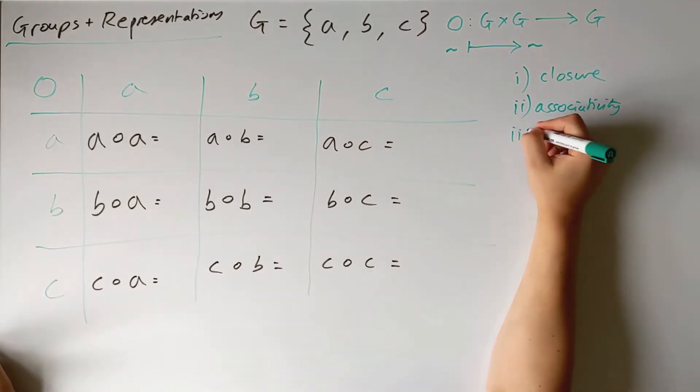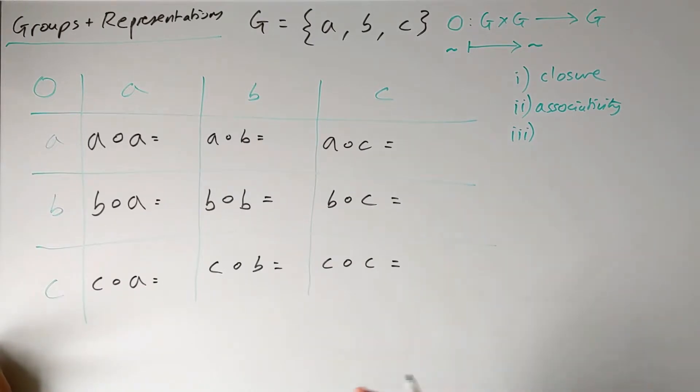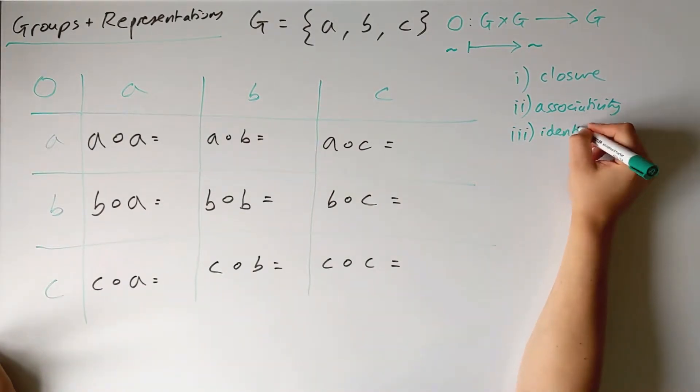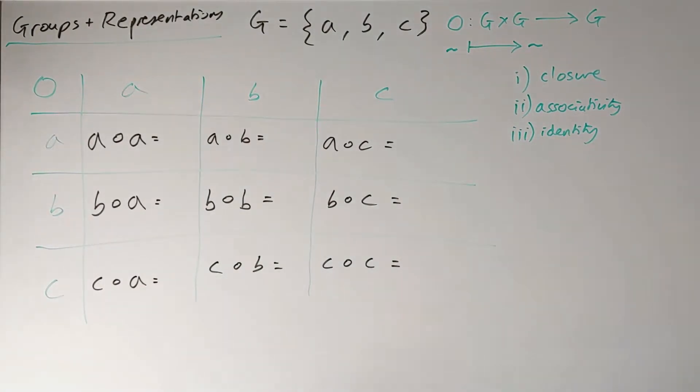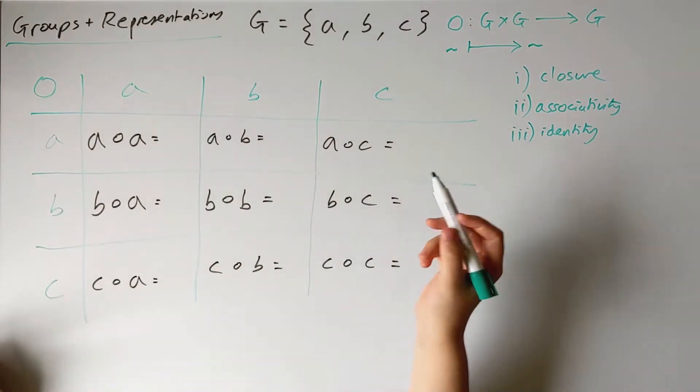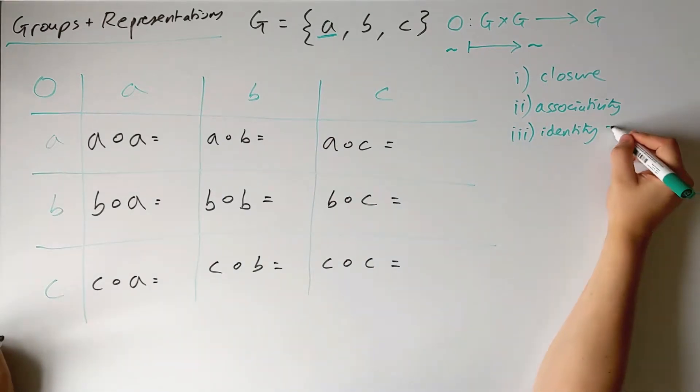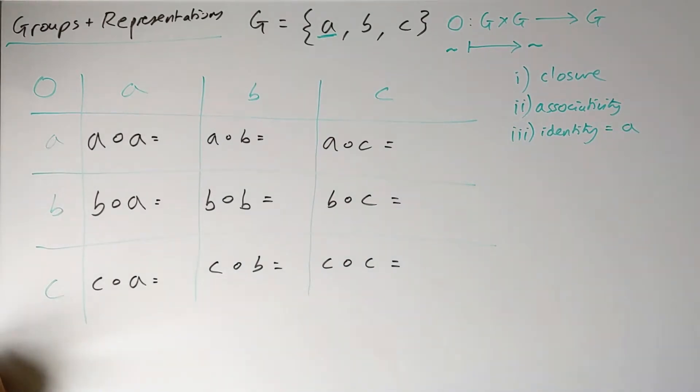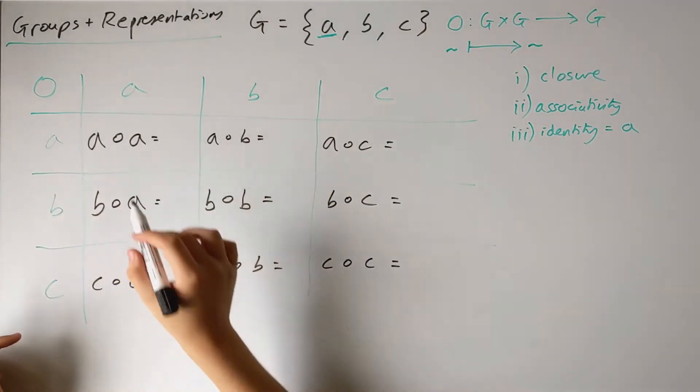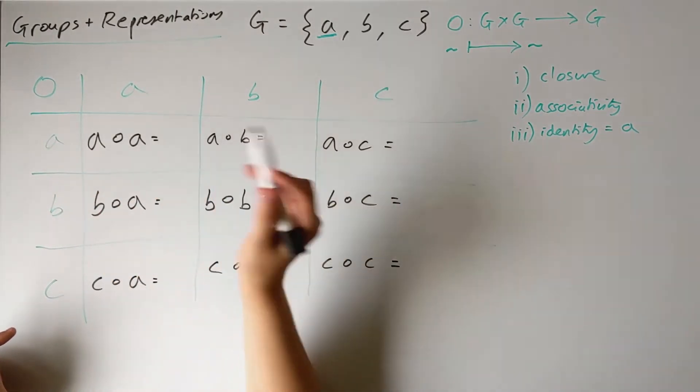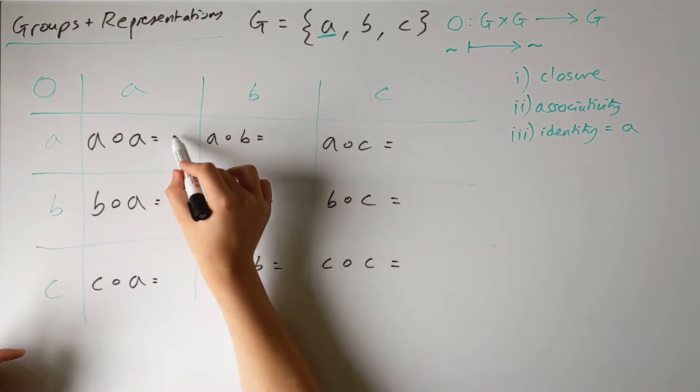Thirdly, there exists some particular element in the group called the identity element. When you compose any element with the identity, you are just returned to that element. I'm going to declare that a is to be the identity element of our group, so I can immediately write down that any element composed with a is just going to give back that element. So a composed with a is a.